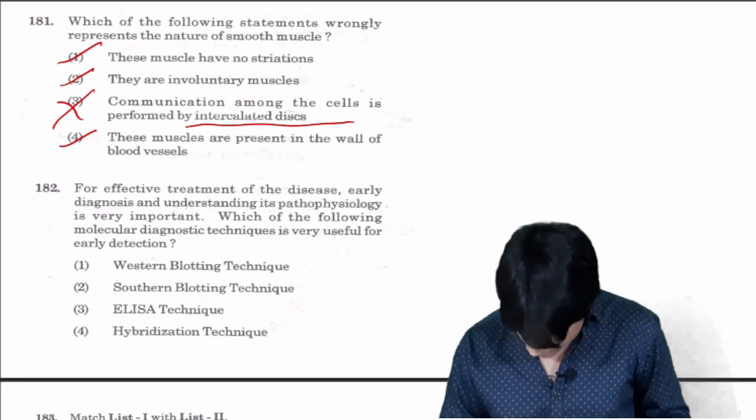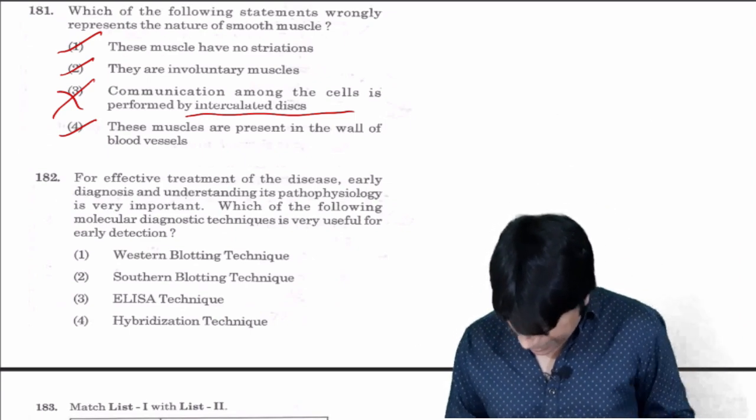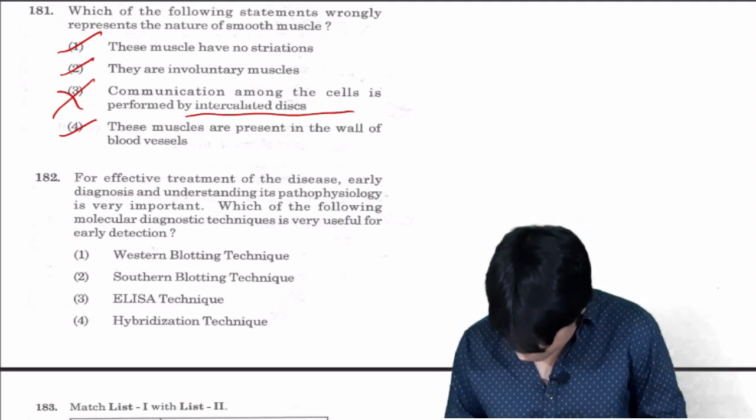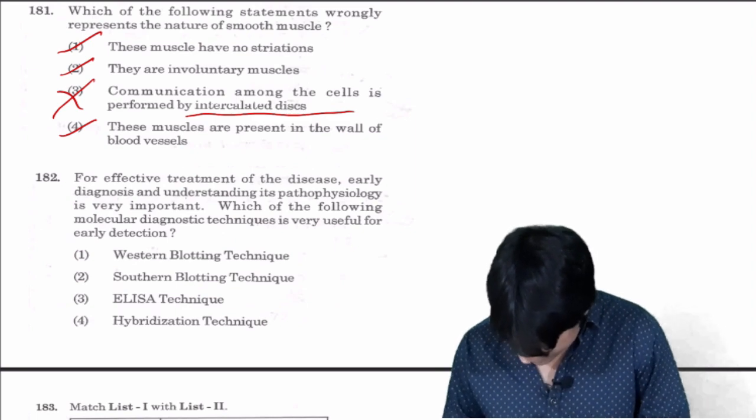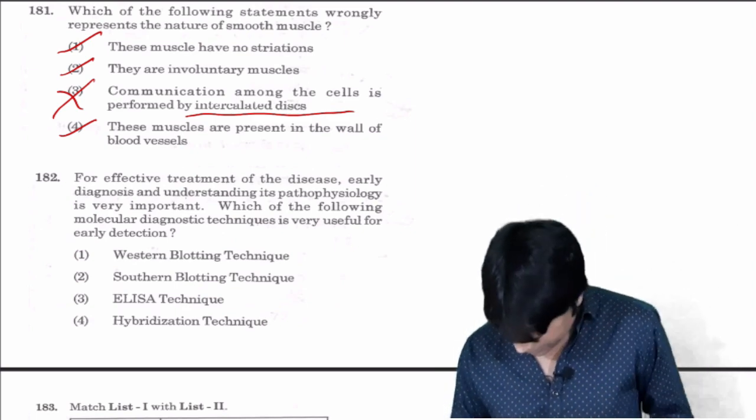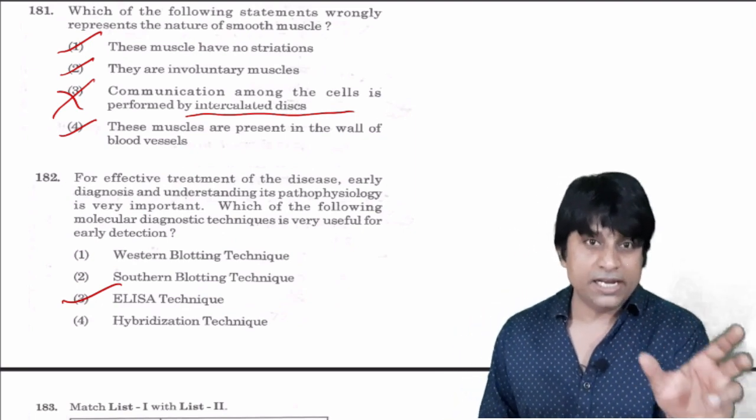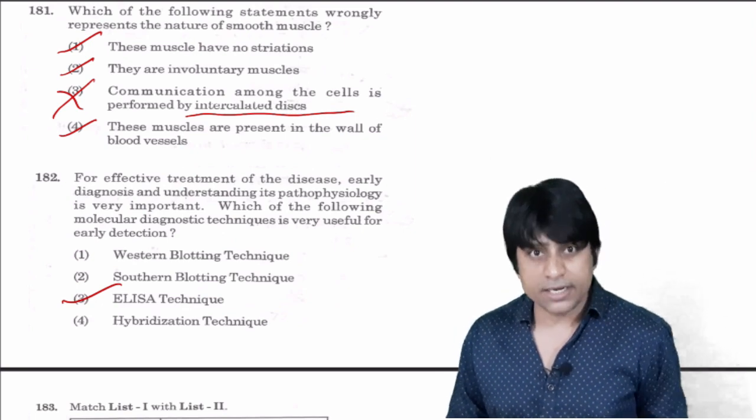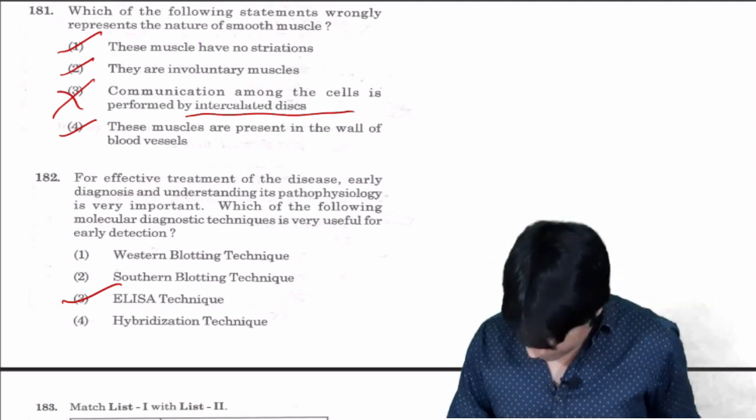Answer is three, three is the wrong statement. For effective treatment of disease, early diagnosis and understanding its pathophysiology is very important. Which among the following molecular diagnostic technique is very useful for early detection? Here ELISA technique. In molecular diagnosis we have ELISA, PCR and others. This is ELISA technique, enzyme linked immunosorbent assay.